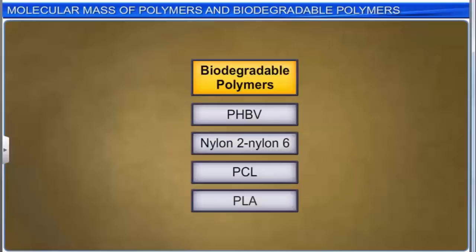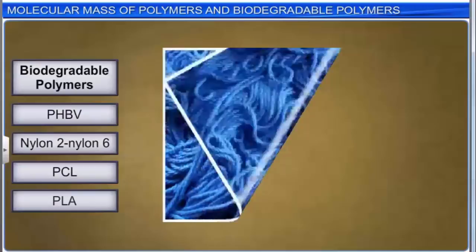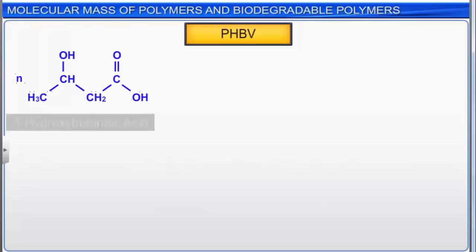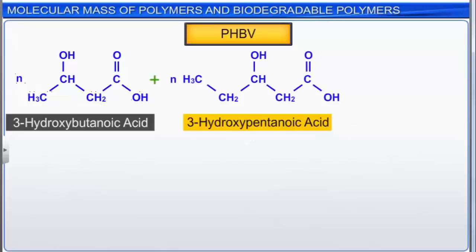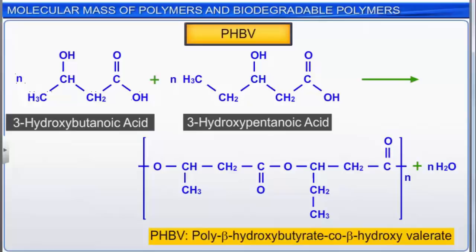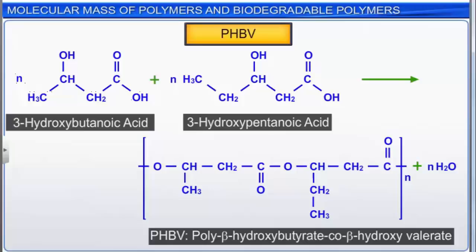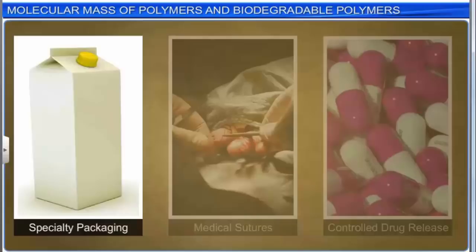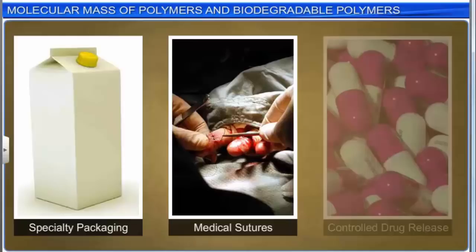Biodegradable polymers that are synthesized contain functional groups similar to those in biopolymers such as wool, silk, and cellulose. The co-polymerization of 3-hydroxybutanoic acid and 3-hydroxypentanoic acid forms a synthetic biodegradable polymer PHBV (poly-beta-hydroxybutyrate-co-beta-hydroxyvalerate). Notice the ester linkage in the repeating unit of PHBV. PHBV is used for specialty packaging, medical sutures that don't have to be removed after surgery, and controlled drug release.